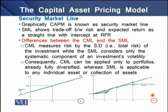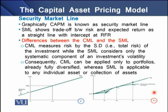CML measures riskiness by the standard deviation of the investment, whereas the SML considers only the systematic component of an investment's volatility, represented by beta. In CML, the riskiness of the portfolio is measured through the portfolio's standard deviation. As a consequence, CML can be applied only to fully diversified portfolios, whereas SML is applicable to any individual asset or collection of assets.